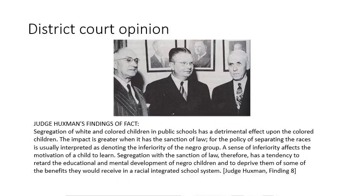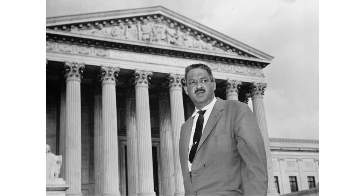In 1952, the case reached the U.S. Supreme Court. The other cases involved were interesting: there was a Virginia case, a Delaware case, a South Carolina case, and a Washington D.C. case. The Virginia case started with a 16-year-old girl walking out of school to protest segregation and ended up in the Supreme Court. In the Delaware case, it was the only one of the five where the district court ruled in favor of the plaintiffs — the judge looked at the facilities, decided the Black schools were so poorly funded that it violated separate but equal, and ordered the schools to be integrated. All five cases reached the Supreme Court in 1952.